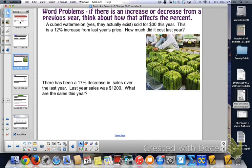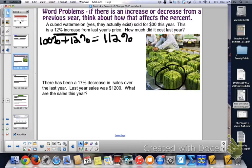Word problems: if there is an increase or decrease from a previous year, think about how that affects the percent. A cubed watermelon sold for $30 this year. This is a 12% increase from last year's price. A 12% increase means it's now last year's price plus another 12%. 100% plus 12% means the total is 112%. So 112% of last year's price equals $30, which is this year's price.